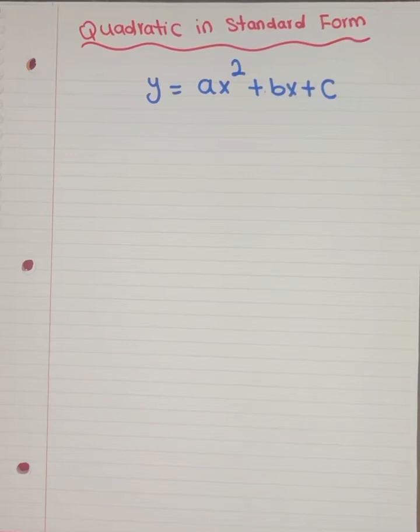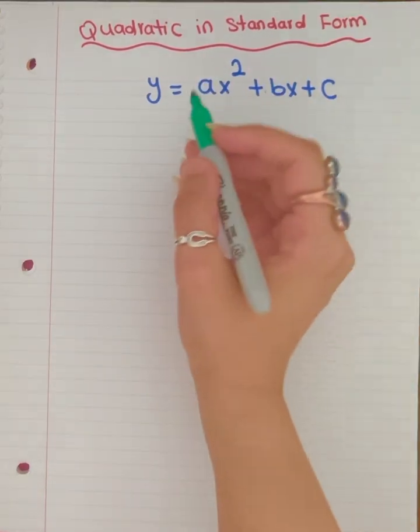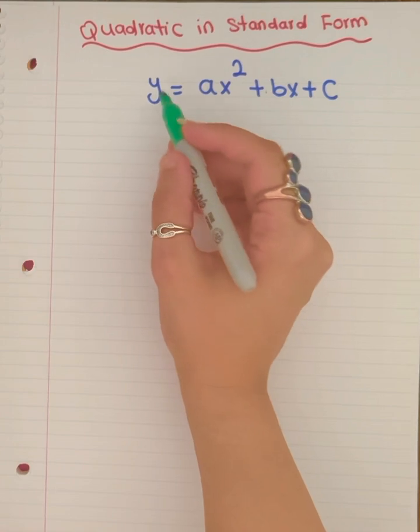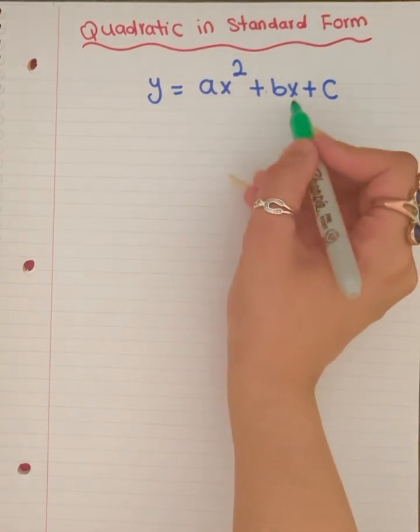One way to find a quadratic is when it's in standard form. This is the standard form. The standard form is y equals ax squared plus bx plus c.